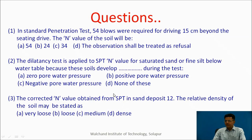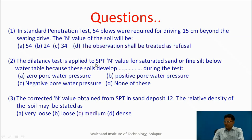Practice questions. In a standard penetration test, 54 blows were required for driving 15 cm beyond the seating drive. The N value options are 54, 24, or 34. The correct answer is that the observation shall be treated as a refusal. Second question: the dilatancy correction is applied to SPT N values for saturated sand or fine silt below the water table because these soils develop positive pore water pressure during the test. The answer is positive pore water pressure.